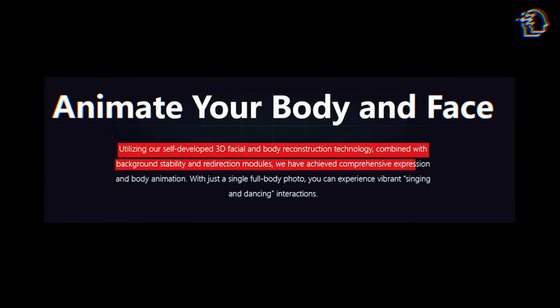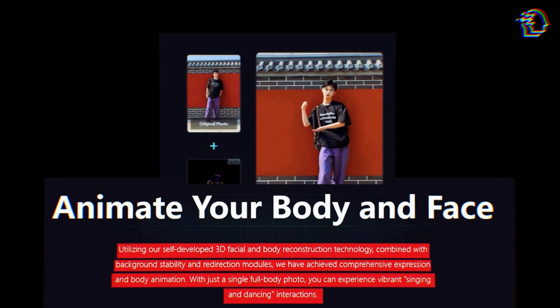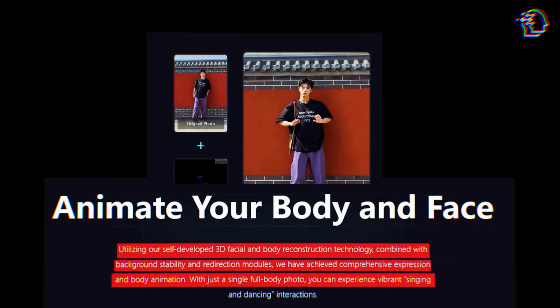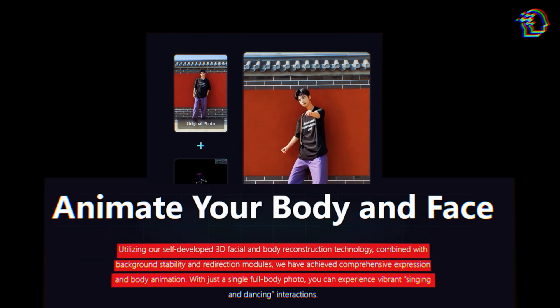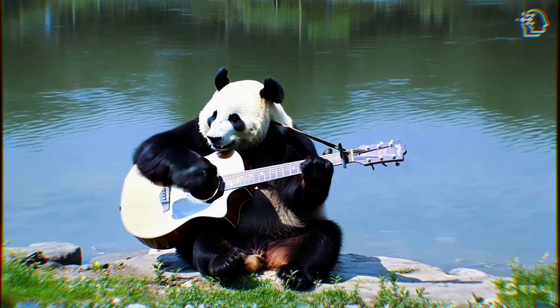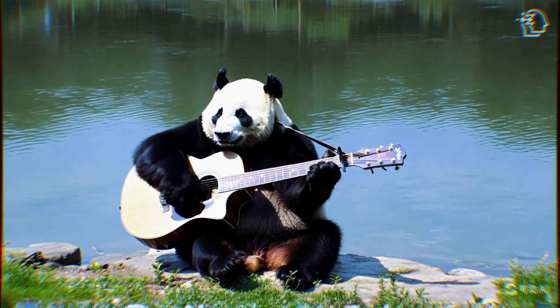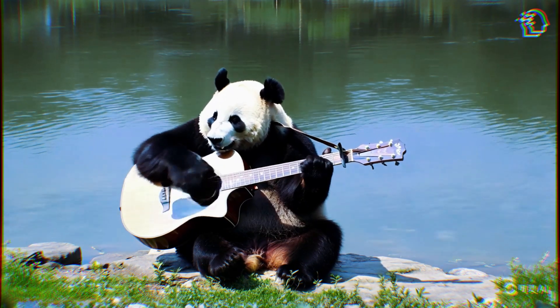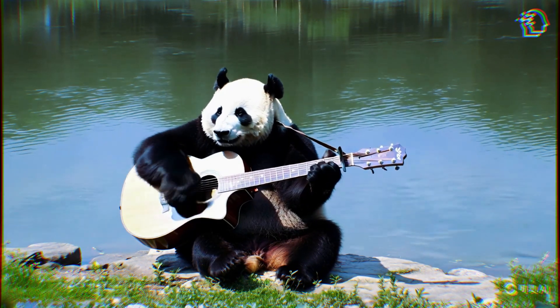Kling AI's full-drive technology for facial expressions and limbs is another standout feature. Using self-developed 3D face and body reconstruction technology, Kling can animate full-body shots with remarkable accuracy. The stability and redirection modules ensure that movements are smooth and natural. This capability is showcased in a video where a panda plays the guitar — the panda's movements are so lifelike that it's difficult to distinguish it from a real performance.